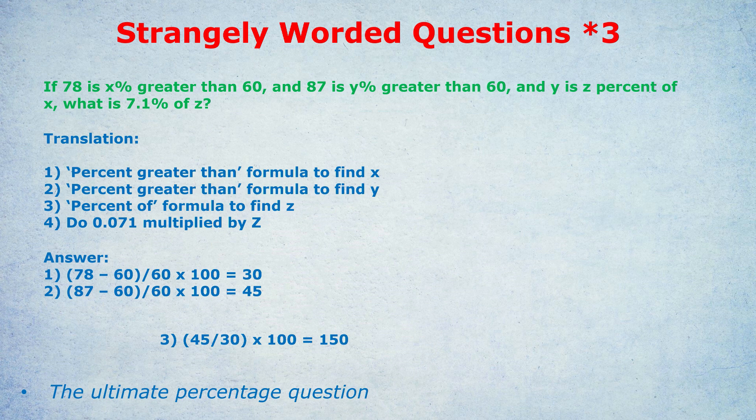Finally, what is 7.1% of z? Well, as I've said earlier, that's 0.071 times 150. That gives us, if you do it on the calculator, 10.65. So we know the answer is 10.65.